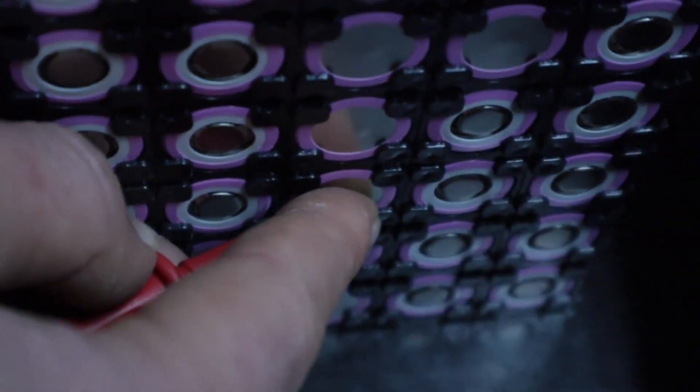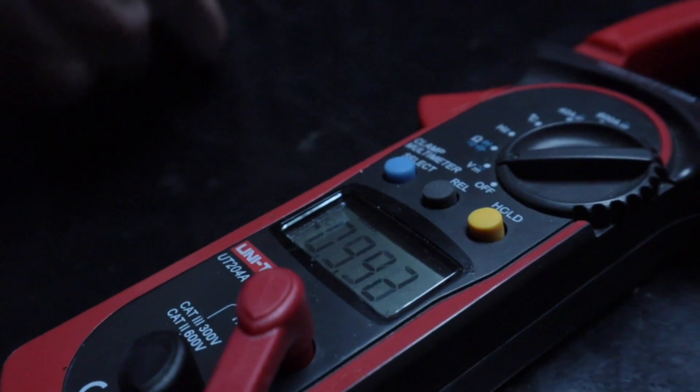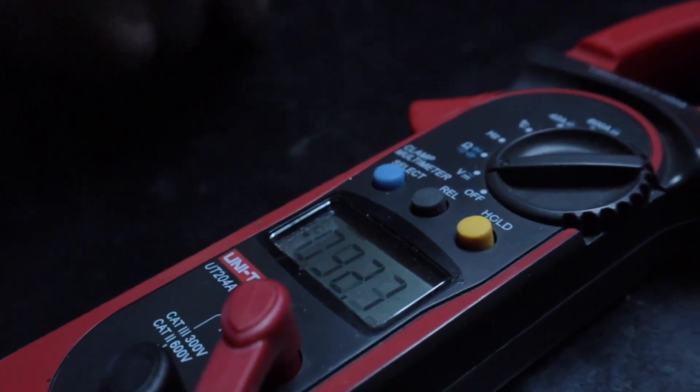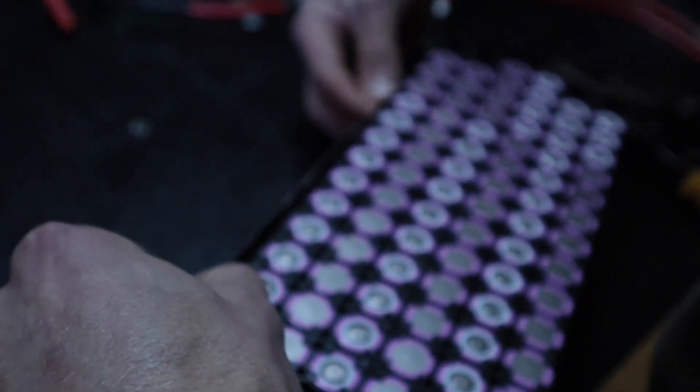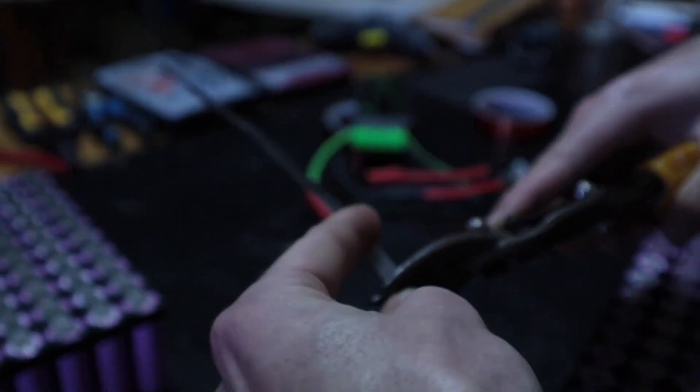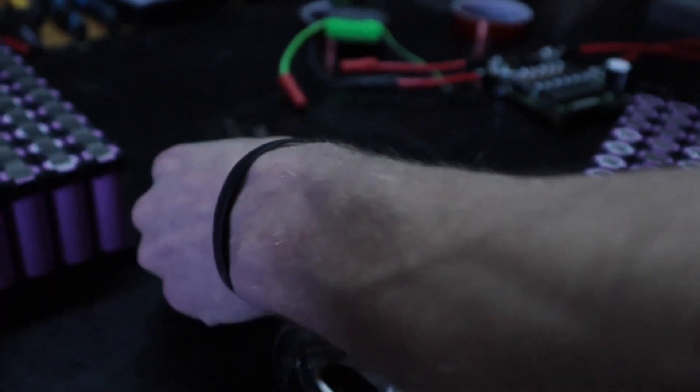All of the cells need to be at the same voltage when we spot weld them together. If not, Ohm's law comes into play. A difference in voltage from parallel cells will cause the current to rush from the highest to the lowest cells. The bigger the difference in voltage and the size of the battery, the higher the current is, causing damage to the cells and BMS in some cases.